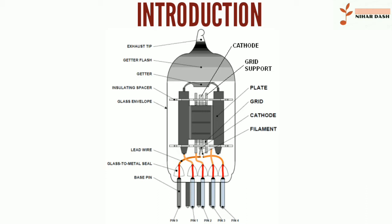In both types, the electrons are accelerated from the cathode to the anode by the electric field in the tube. The simplest vacuum tube, the diode, invented in 1904 by John Ambrose Fleming, contains only a heated electron-emitting cathode and an anode. Electrons can only flow in one direction through the device, from the cathode to the anode.